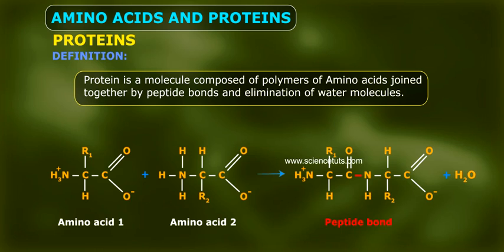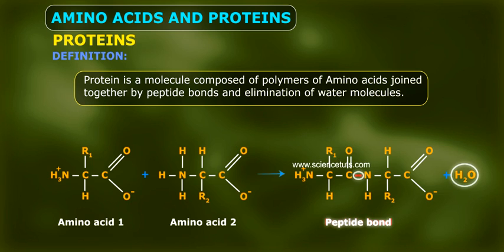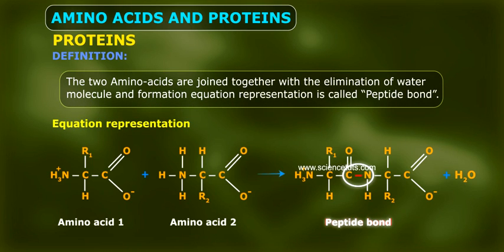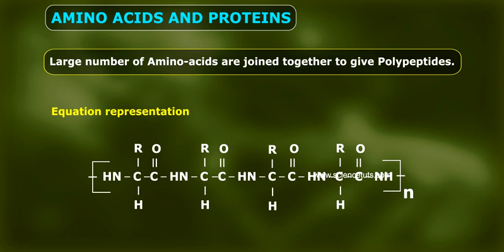Protein is a molecule composed of polymers of amino acids joined together by peptide bonds and elimination of water molecules. Two amino acids are joined together with the elimination of a water molecule to form a peptide bond. A large number of amino acids joined together give polypeptides.